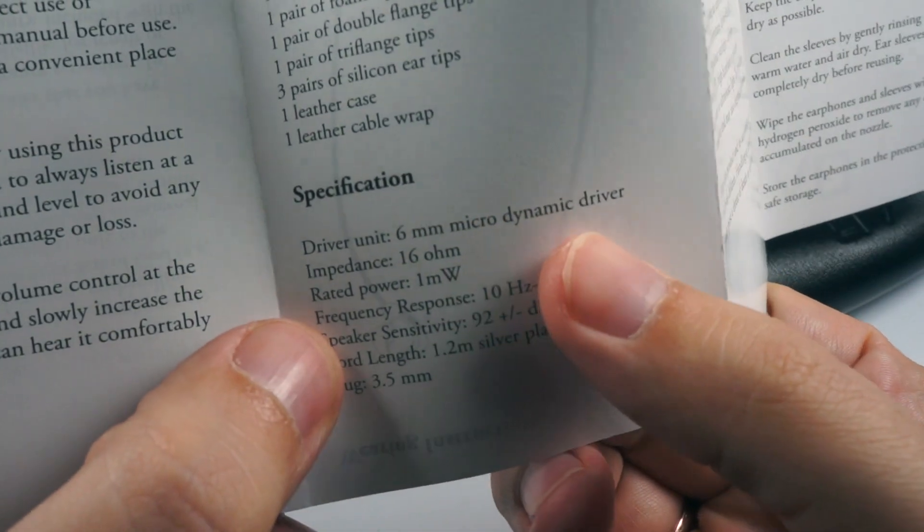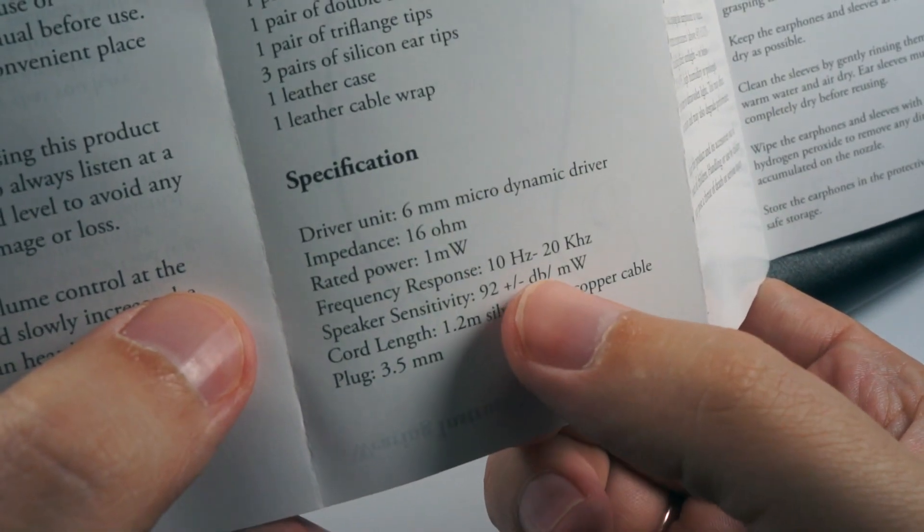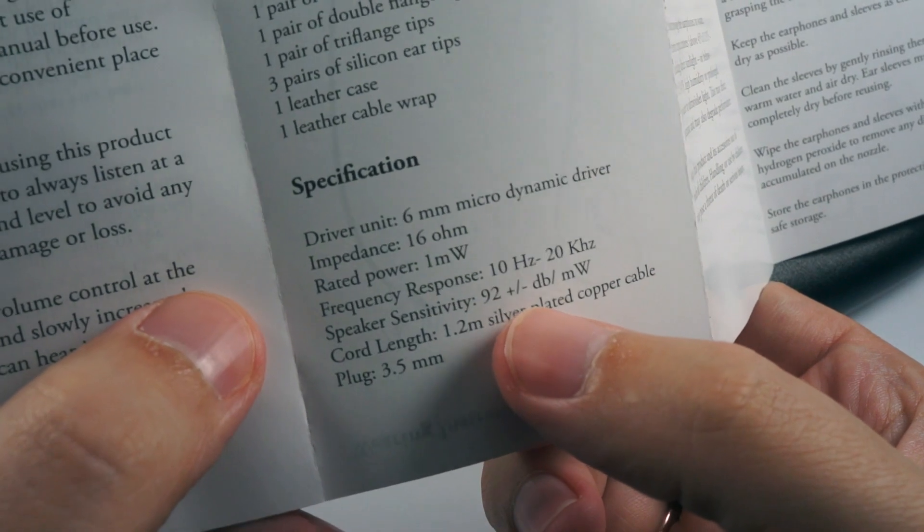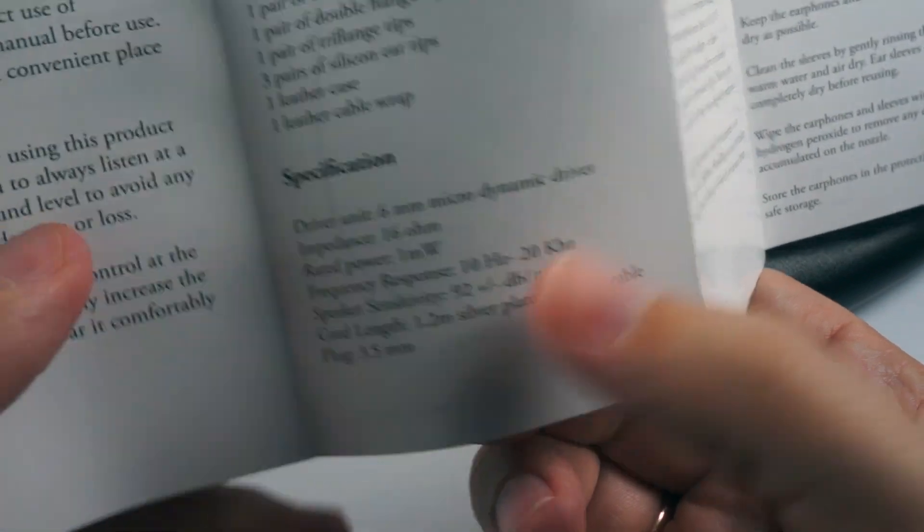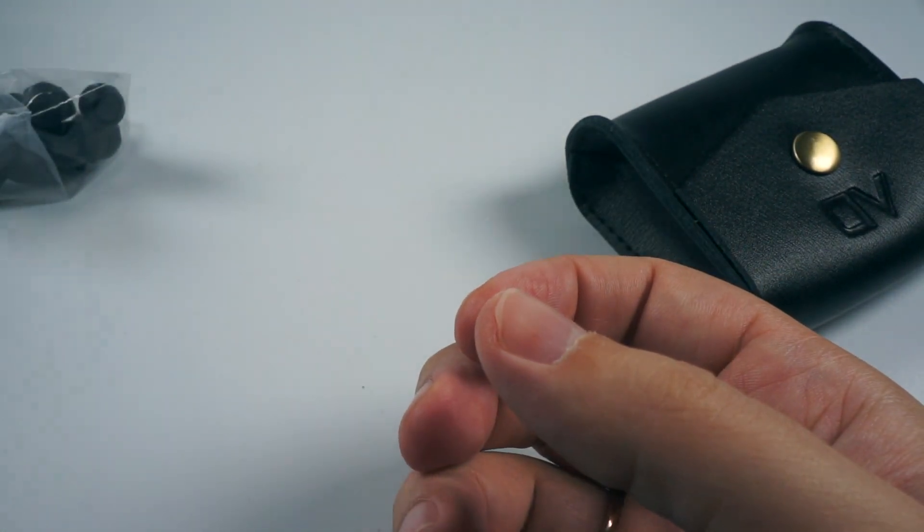6mm micro dynamic driver, 16 ohms impedance, 1 milliwatt rated power, 10 Hz to 20 kHz, 92 dB sensitivity. As you can see, really good specifications so they won't be too noisy with even powerful DACs.